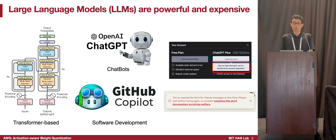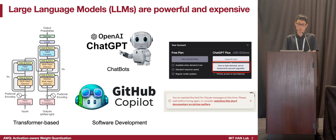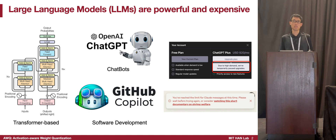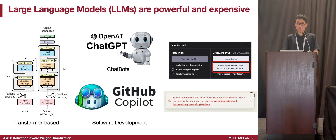Large language models are very powerful; however, they are very expensive as well. These models have been widely deployed in today's everyday applications, such as chatbots and software development. However, you usually notice messages from OpenAI and Anthropic saying that they are experiencing very high demand and cannot provide the service as expected.